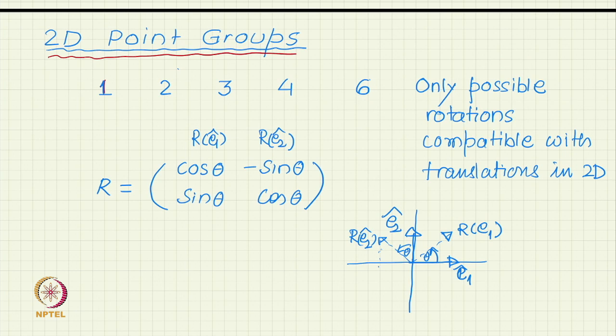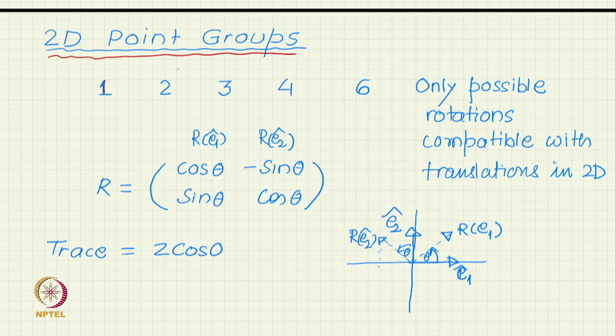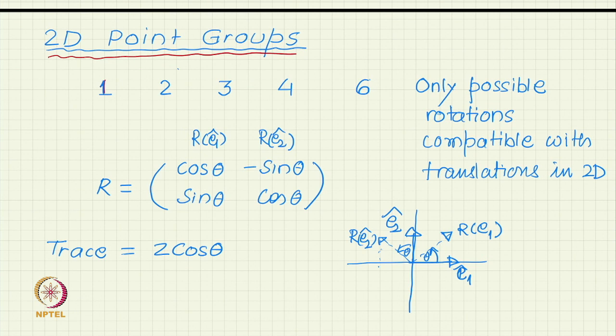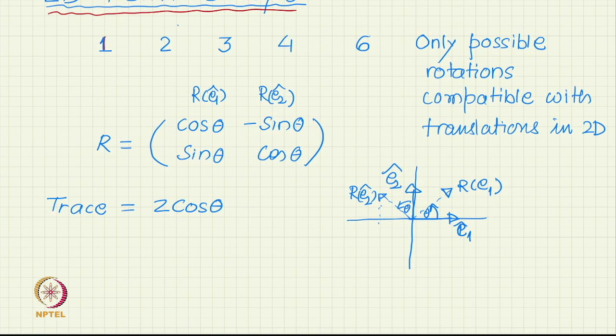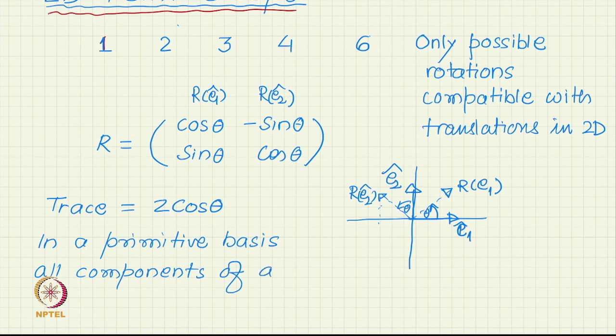That is your rotation matrix. All the same philosophy, only thing is that there you got the trace as 2 cos theta plus 1 because there was one more column 0 0 1. Here the trace will be simply 2 cos theta. This was in an orthogonal system. If you do it in a lattice basis, primitive lattice basis, all those arguments which we gave for 3D is exactly we are repeating. In a primitive basis, all components of a matrix will be integer.